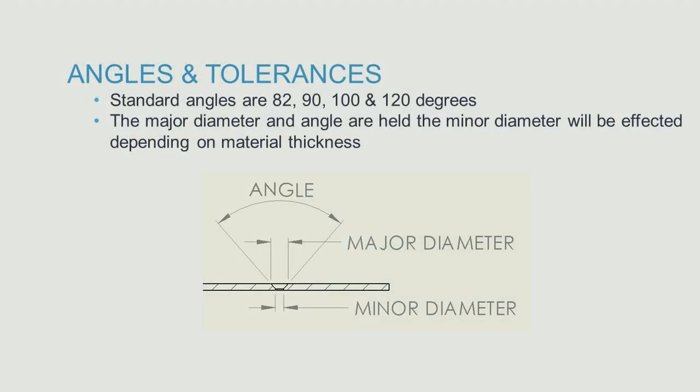The industry standard angles for countersinks are 82, 90, 100, and 120 degrees. These angles are used to accommodate the multitude of screws or rivets that could be used on an assembly.